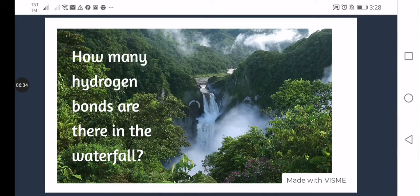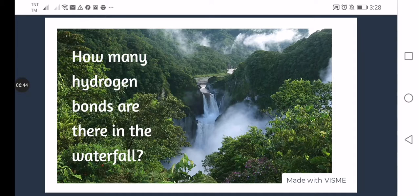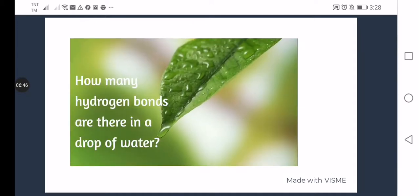So one bond can be found here. Another one is here. Here as well. And another one is here. For you to have a clear picture as to the occurrence of large number of hydrogen bonds, let's take a look at this. Again, remember that one water molecule is equivalent to four hydrogen bonds. Now, how many water molecules do you think are there in that particular waterfall? How about the hydrogen bonds? How about in a drop of water? How many water molecules and hydrogen bonds are there?